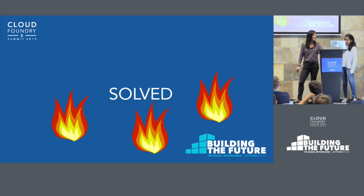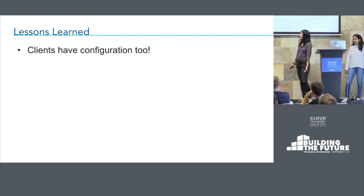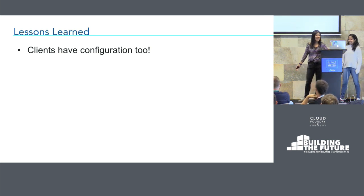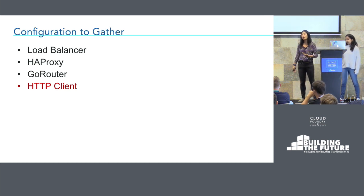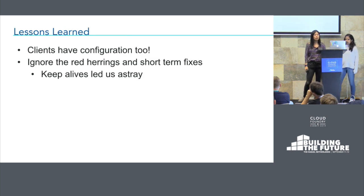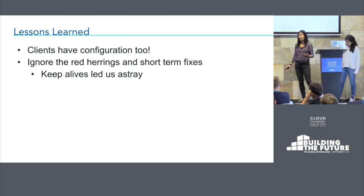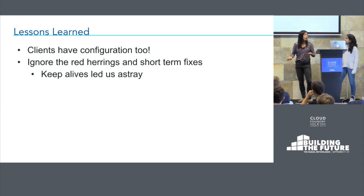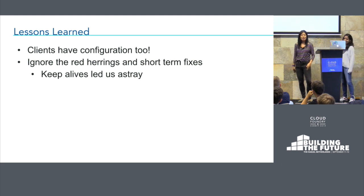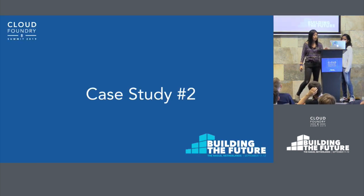This was also confirmed by looking at the HA proxy configuration we had gathered previously, where we saw that the keepalive timeout was set to half a second. So after half a second, the HA proxy was closing the connection, but the client simply wouldn't respect it. The key takeaways: clients have configuration too — when gathering configuration, look at any HTTP clients in the data path. Also, ignore red herrings and short-term fixes. In this example, keepalives led us astray at first to form an incorrect first hypothesis. Only after finding the root cause were we able to go back and explain why keepalives would fix the issue — which was a whole other debugging session.